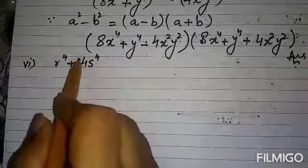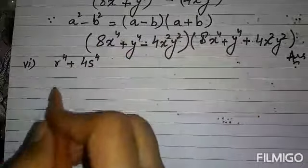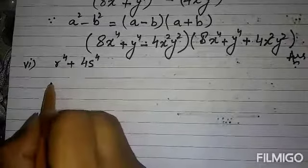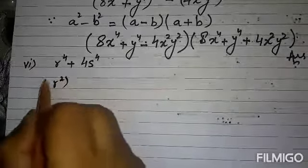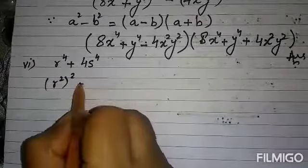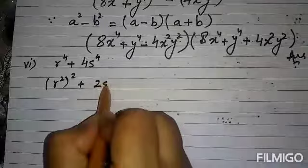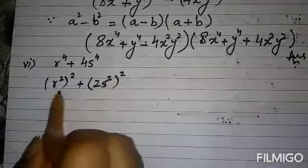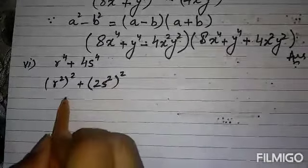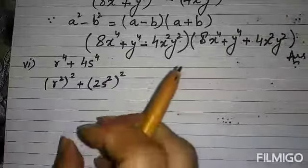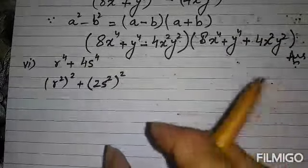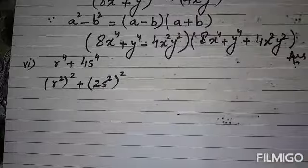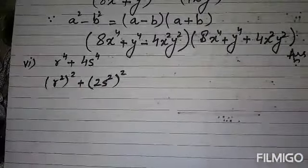The sixth part is r⁴ + 4s⁴, a similar question. First convert into squared form: r⁴ is (r²)² and 4s⁴ is (2s²)². Then add and subtract the middle term 4r²s², complete the perfect square, and expand using the difference of squares formula. This is your task to solve independently.